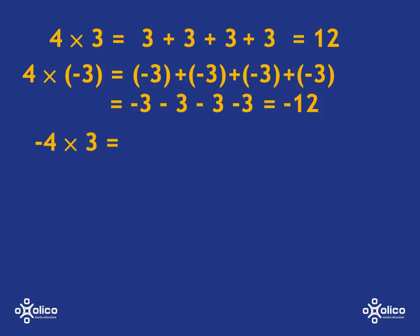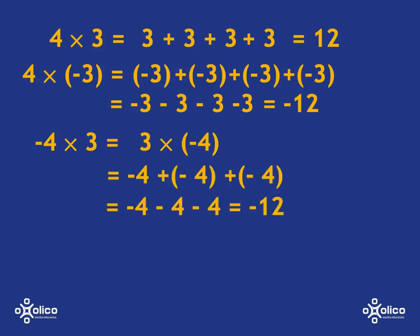If we do negative 4 multiplied by 3, well, we can always just swap around the order in which we do multiplication. So that's the same as 3 multiplied by negative 4. So that's 3 lots of negative 4, which is going to be negative 4 subtract 4 subtract 4, which is negative 12.